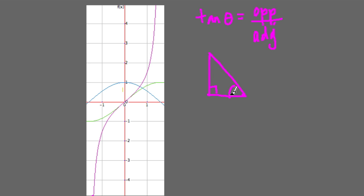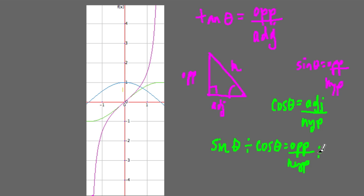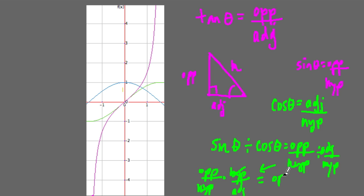Here's my right triangle, and here's theta. Tangent is equal to the opposite side over the adjacent. But also, sine of theta is equal to the opposite over the hypotenuse, and cosine of theta is equal to the adjacent over the hypotenuse. So what happens if you take sine of theta — this is a pretty important trig identity — divided by cosine of theta? That means the opposite over the hypotenuse divided by the adjacent over the hypotenuse. When we divide like this, it's the opposite over the hypotenuse times the hypotenuse over the adjacent. The hypotenuses cancel out, and what we're left with is opposite over adjacent.